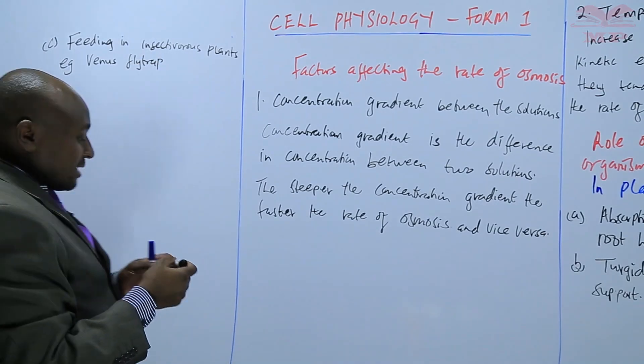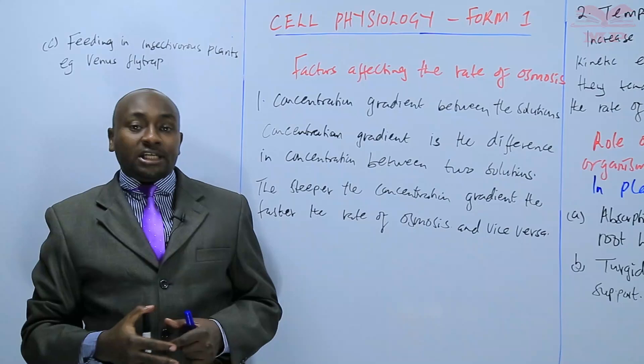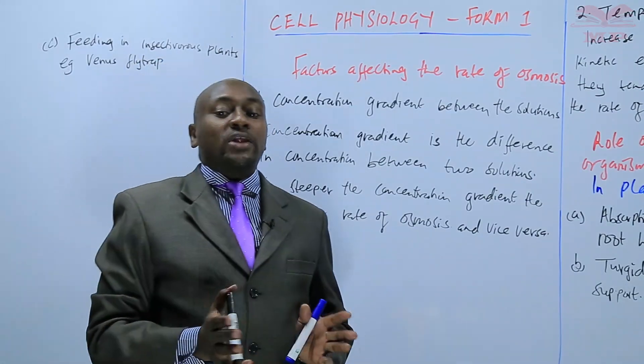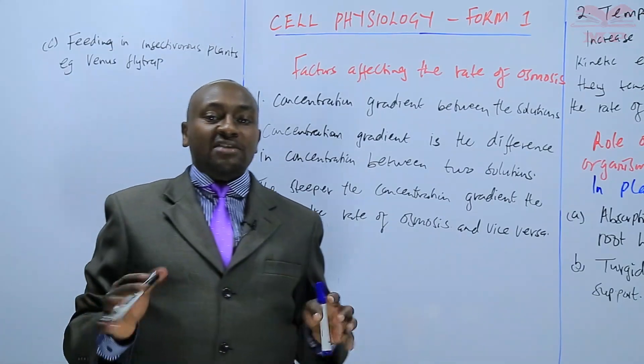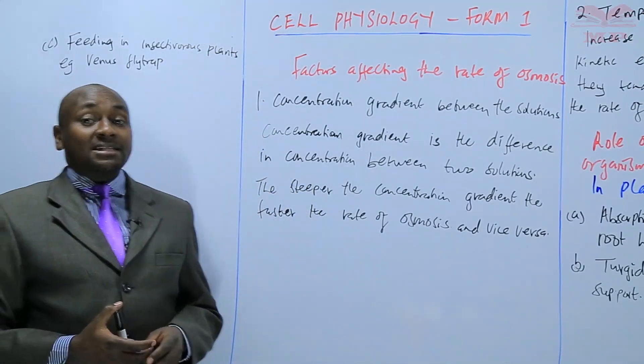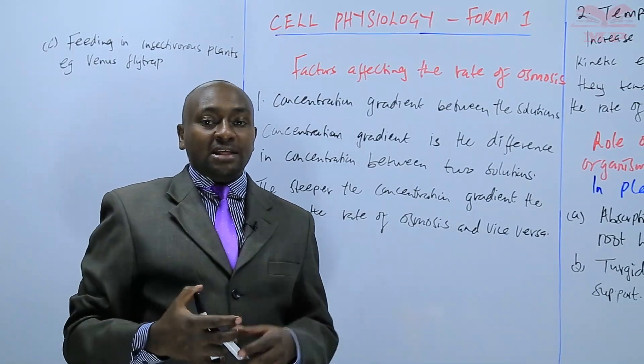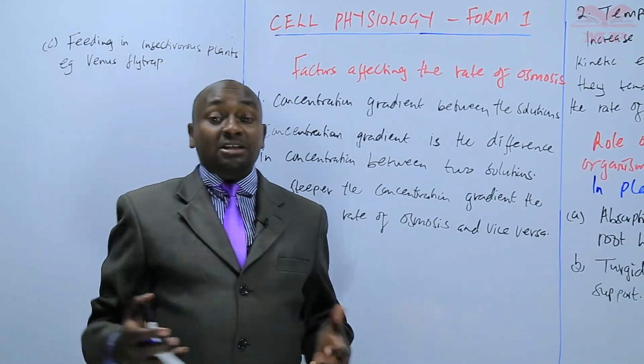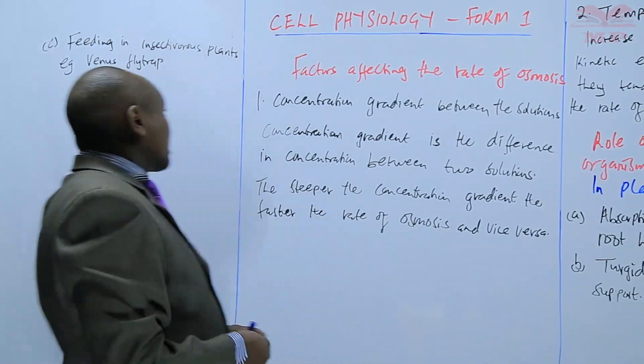And what happens is that these plants accumulate water on their leaves so that they can be able to trap whichever the insect or whichever the animal that they are trapping. So that occurs as a result of accumulation of water on the leaves, making the cells to become turgid and therefore close in or trap in the insect.